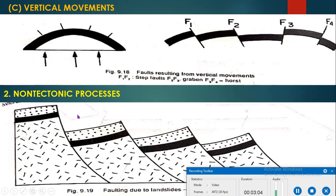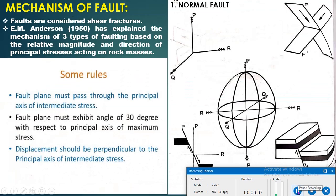In non-tectonic processes, faults are produced due to rock deformation, landslides, etc. Successive slightly curved parallel fractures with characteristic displacement occur in rock bodies under certain conditions due to landsliding and slumping. In the non-tectonic process, block mountain faults and strike-slip faults are also produced.